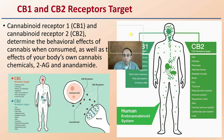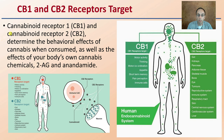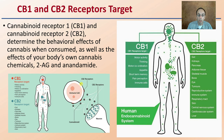CB1 and CB2 receptor targets, generally: CB stands for cannabinoid receptor — cannabinoid receptor 1 and cannabinoid receptor 2. They determine the behavioral effects of cannabis when consumed, as well as the effects of your body's own cannabis-like chemicals, 2-AG and anandamide. CB1 targets include motor activity, thinking, appetite, short-term memory, pain perception, and some immune cell involvement. CB2 receptor targets are the gut, kidneys, pancreas, bones, eyes, potential tumors, immune system, skin, and central and cardiovascular systems. CB2 receptors are typically located more on immune cells, while CB1 receptors are located more on neurons.